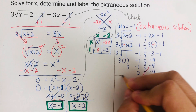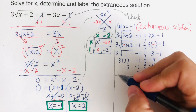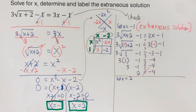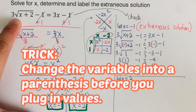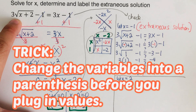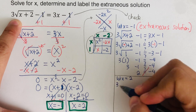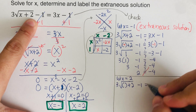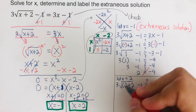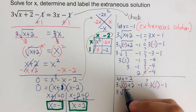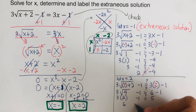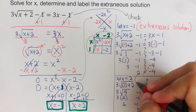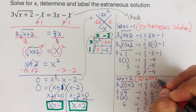Now let's check the other solution. We let x equal two and use the original equation again, changing the variable into parentheses before plugging in values. After substituting two and simplifying, we get five equals five, which means x equals two is our actual solution.